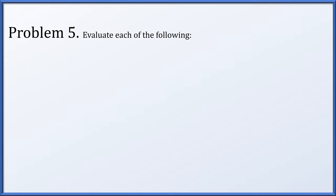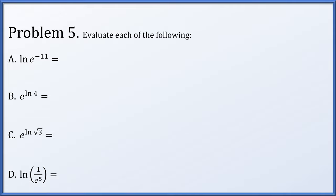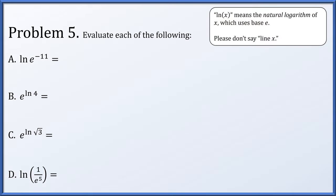In problem 5, we'll be evaluating four different expressions: the natural log of e to the minus 11, e to the natural log of 4, e to the natural log of root 3, and the natural log of 1 over e to the fifth. Remember, natural log of x means the logarithm base e — please do not say 'line x.' For part a, we set the natural log of e to the minus 11 equal to y, convert to exponential form: e to the y equals e to the minus 11, so y equals minus 11.